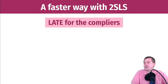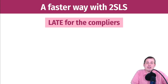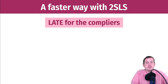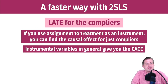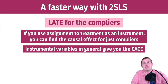That process was really tedious — it took lots of steps and logical thinking. You can do it much faster using an instrument with two-stage least squares. You use assignment to treatment as an instrument, and that gives you the causal effect for just the compliers. Instrumental variables will always give you the complier average treatment effect automatically, because mathematically that's how two-stage least squares regression works behind the scenes.